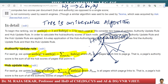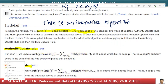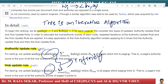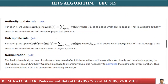Now if you keep running this loop, every time the values of authority and hub score would go to infinity. So what we do is: once we update the authority scores and hub scores for every page or vertex, we simply normalize it, so that the scores don't become infinitely large.